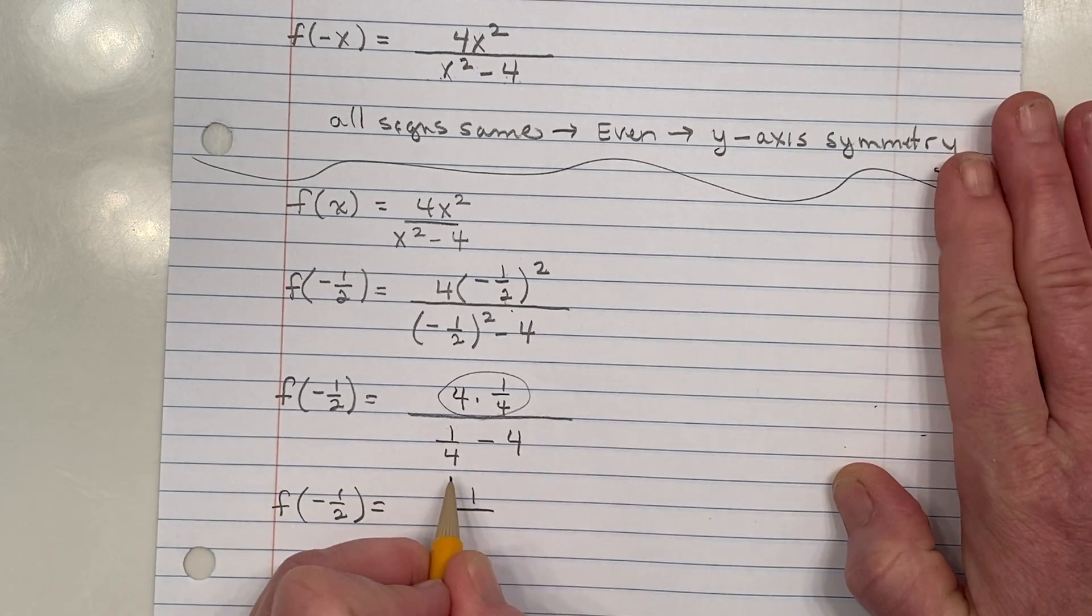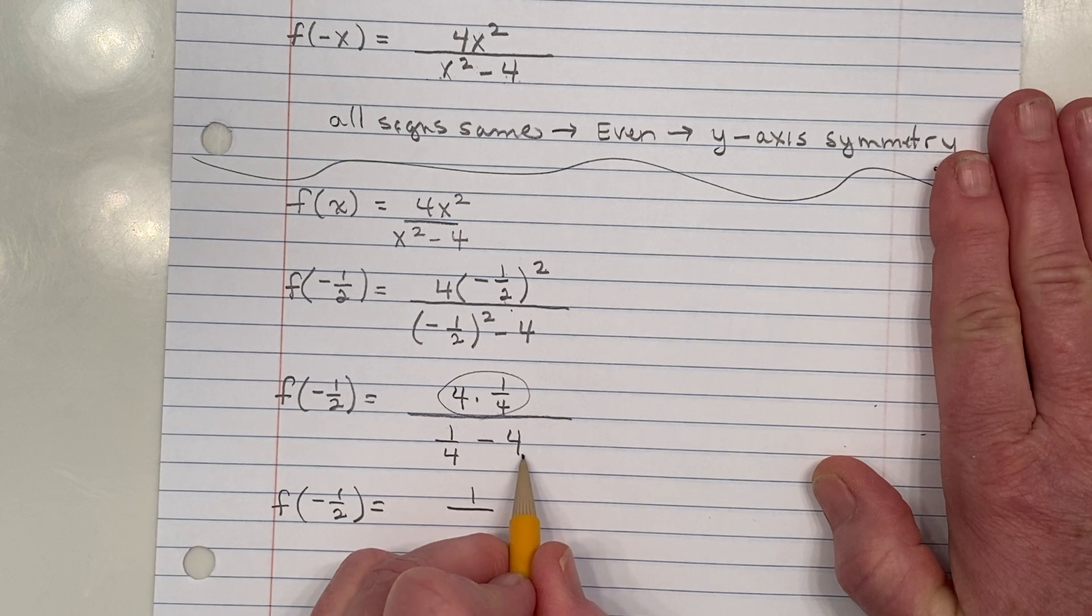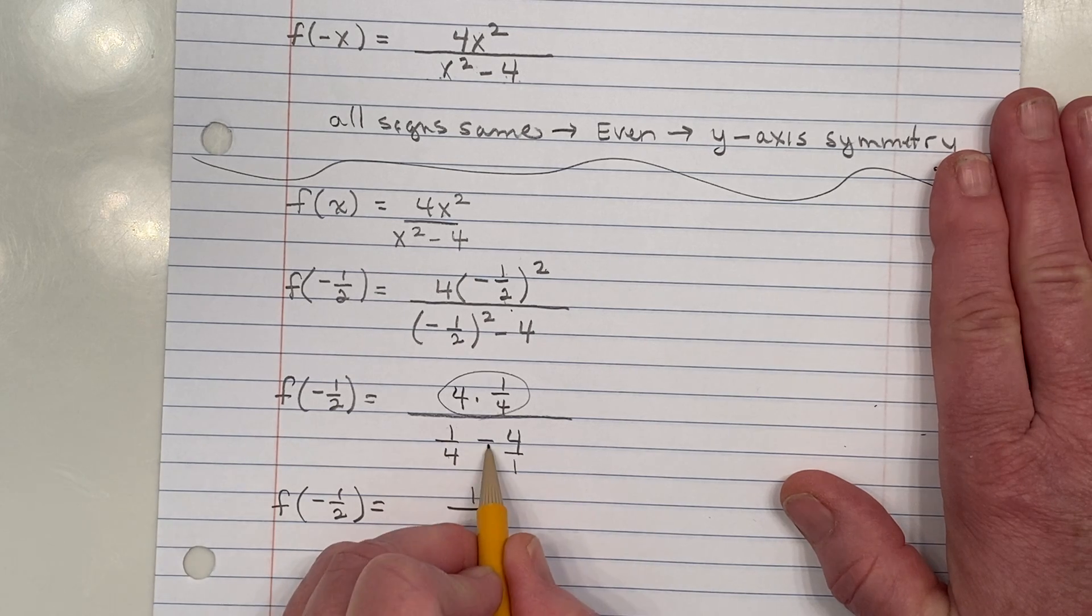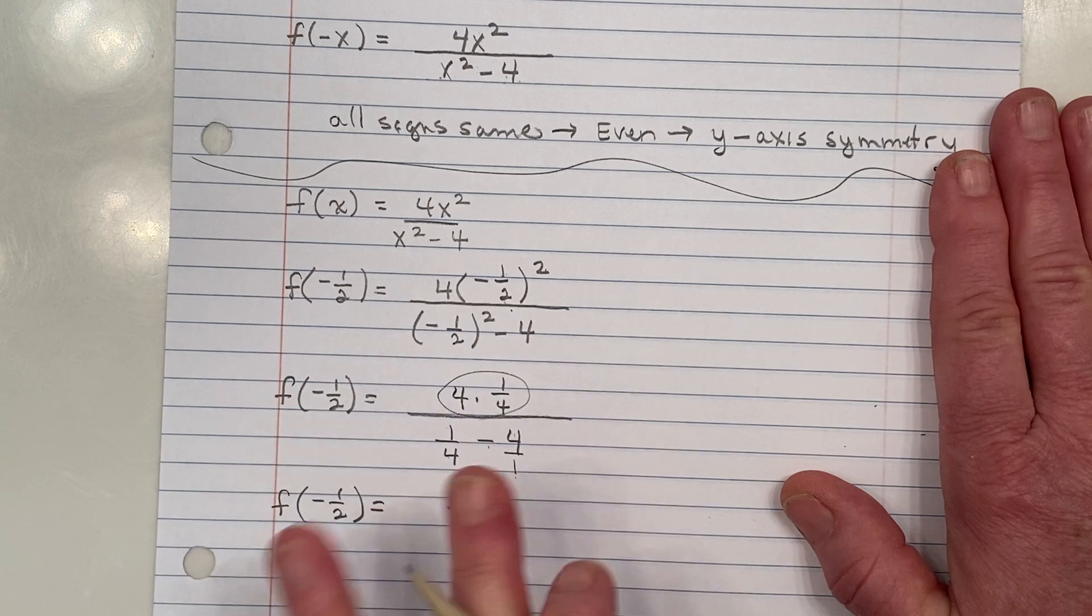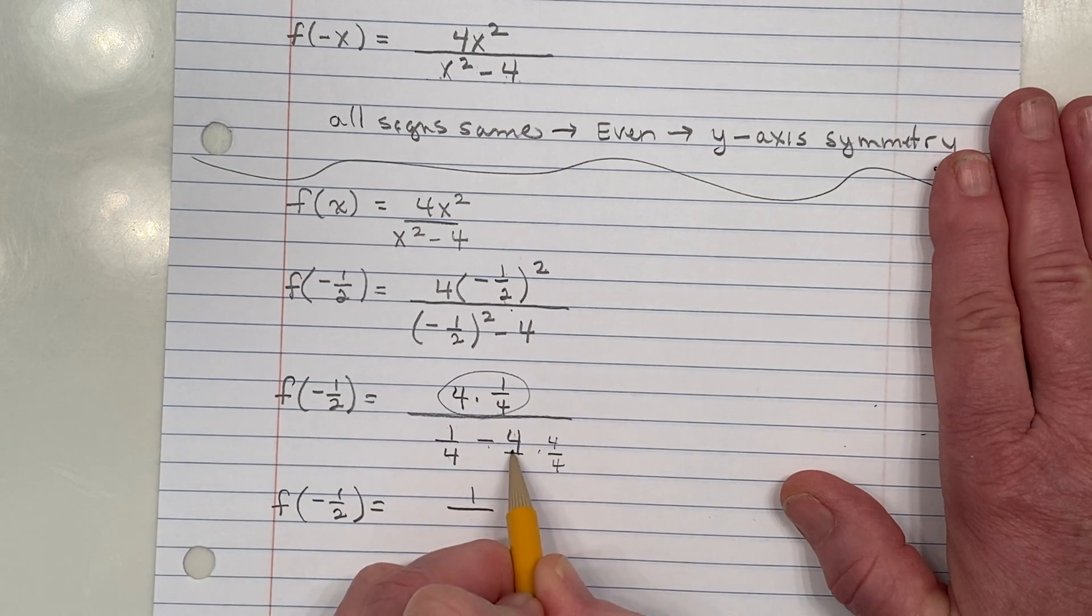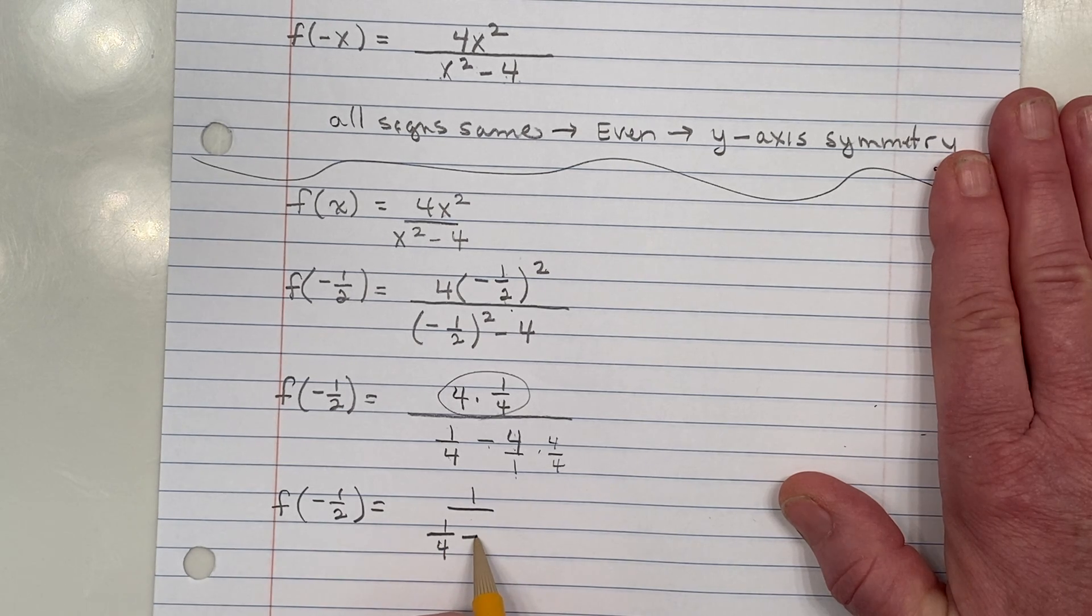Now, down here is where the problem begins. You could try and do this on your calculator, one-fourth minus four. I don't know if the answer will return a decimal, or if your calculator, depending on the kind you use, will return a fraction. But one-fourth minus four over one, I would need a, if I'm going to do this by hand, I'm going to need a common denominator of four. So I'd multiply this fraction by four over four. So that ends up being one-fourth minus 16 over four.